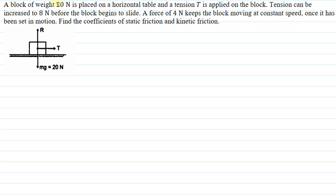The question says: a block of weight 20 N is placed on a horizontal table and a tension T is applied on the block. Tension can be increased to 8 N before the block begins to slide. A force of 4 N keeps the block moving at constant speed once it has been set in motion. Find the coefficient of static friction and kinetic friction.